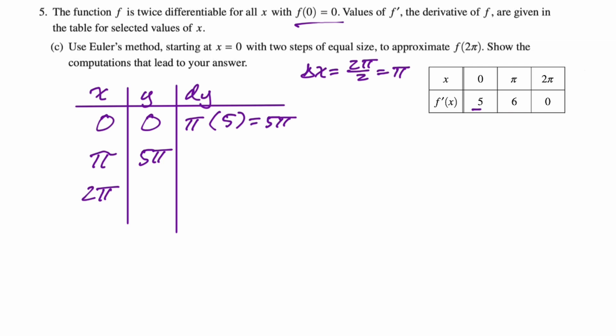Now we do it again. Delta x is π, and then we need to find f prime of π which is 6, and so we get this. 6π is just our dy there. So then our new y value will be our old y value plus dy. So 5π plus 6π is 11π.